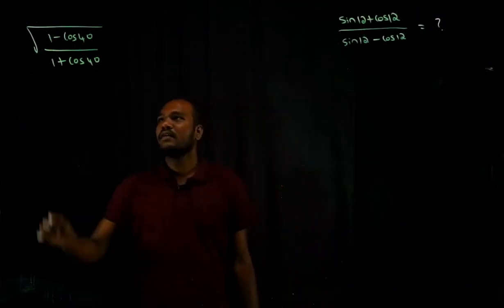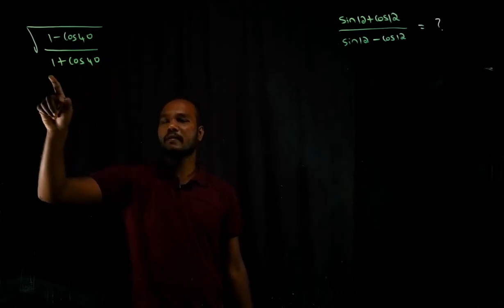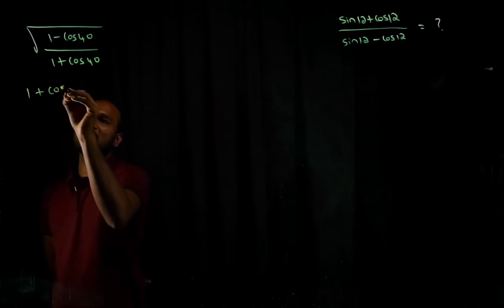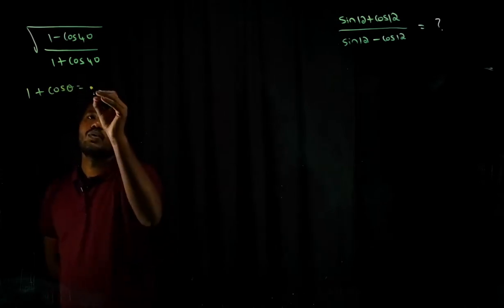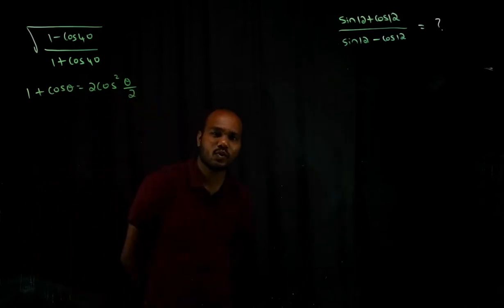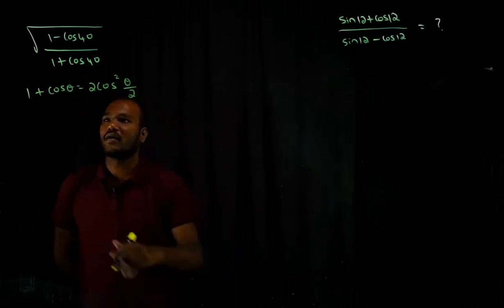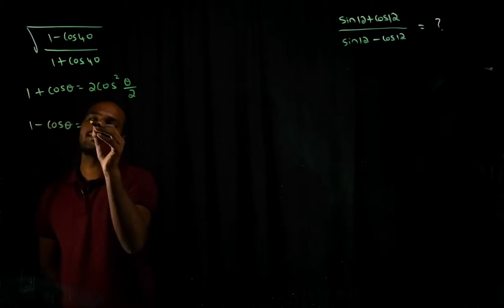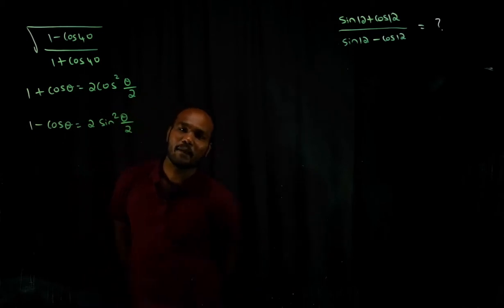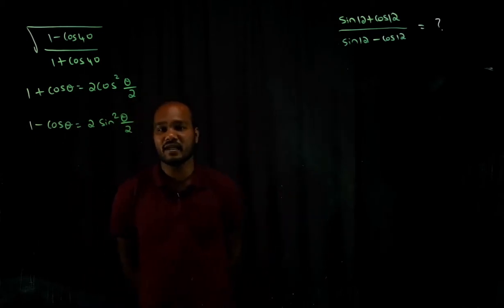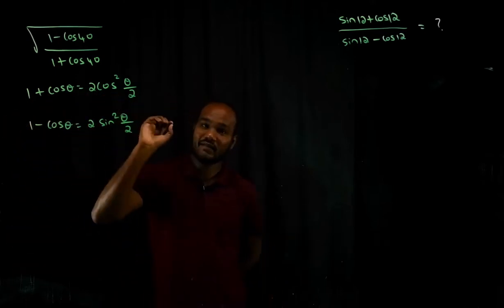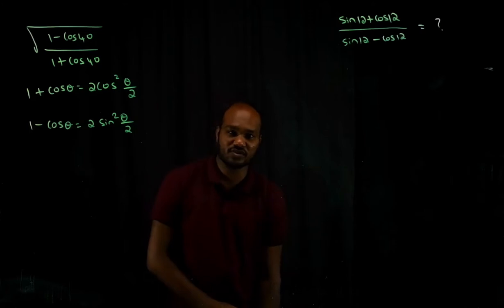The next question: find the root of (1 minus cos 40) divided by (1 plus cos 40) degrees. We know the formula: 1 plus cos theta equals 2 cos squared (theta over 2), and also 1 minus cos theta equals 2 sine squared (theta over 2). We have made an entire video — please go and check it in our playlist. There is an entire video dedicated to explaining these formulas and how to solve questions on this.